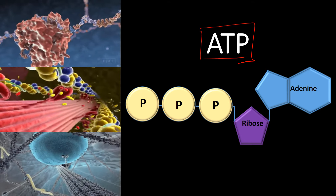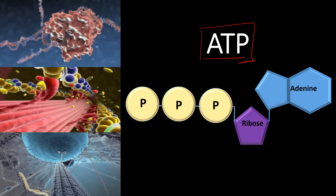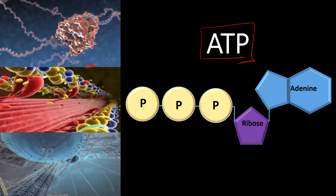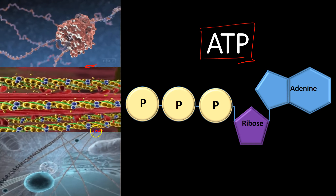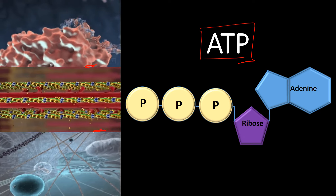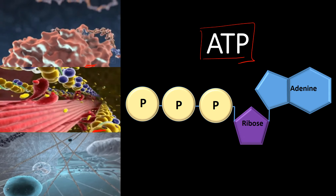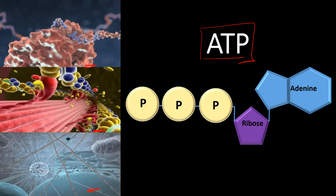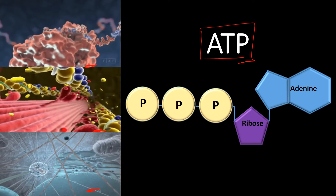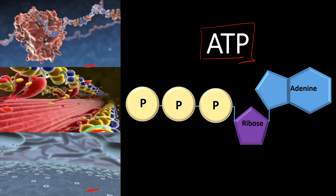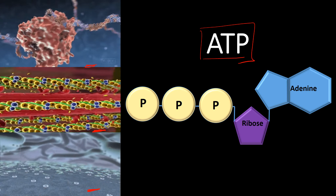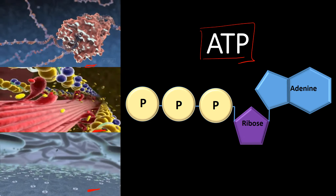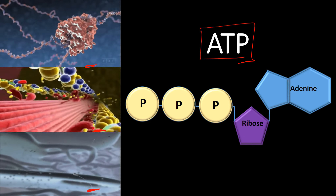If I want DNA replication to happen, I need ATP. If I want a muscle contraction, I need ATP. If my cells are going to transport a vesicle, I need ATP. That's why ATP is called the energy currency — because it's used by literally all cells. All cells use this form of energy.